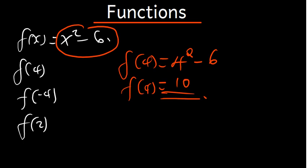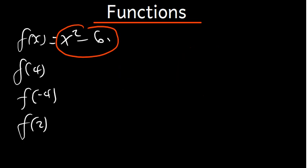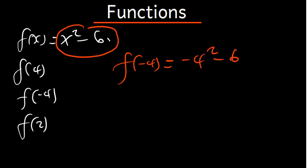Now f of negative 4 is going to be negative 4 squared minus 6. Negative 4 squared gives us 16, and 16 minus 6 is 10. So parts 1 and 2 give the same answer.